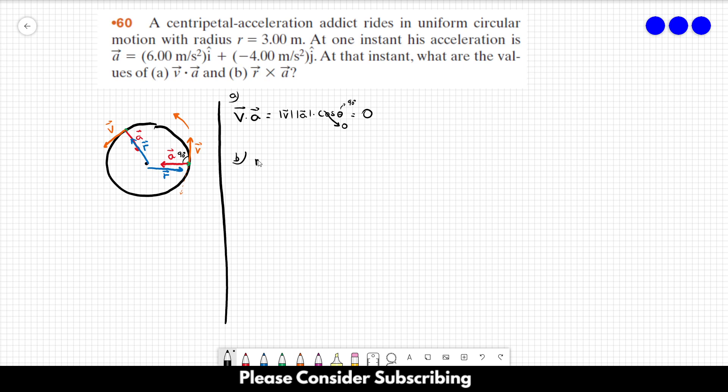For letter B, we want the cross product. One of the properties of the cross product is that the absolute value of a cross product is equal to the magnitude of the first vector times the magnitude of the second vector times the sine of the angle between them. And as you can see here, the angle is 180 degrees.